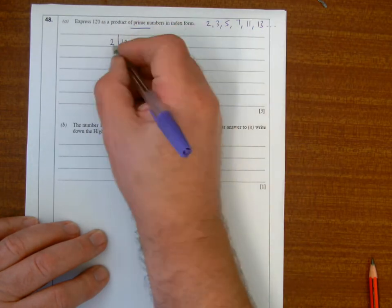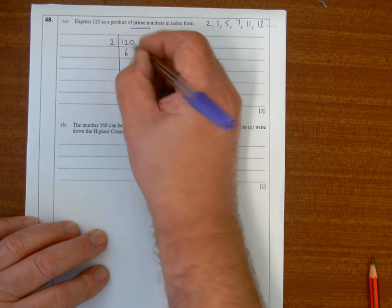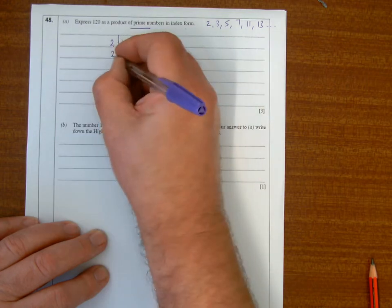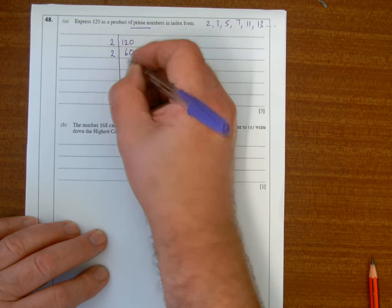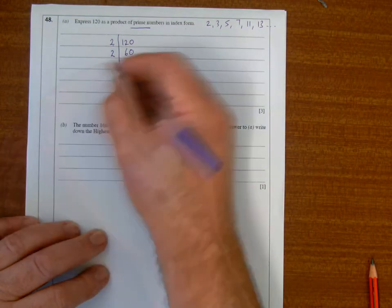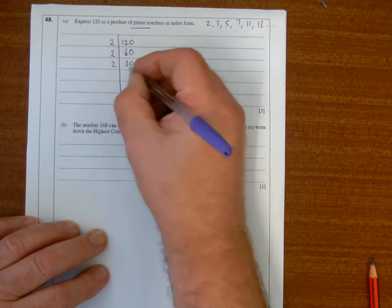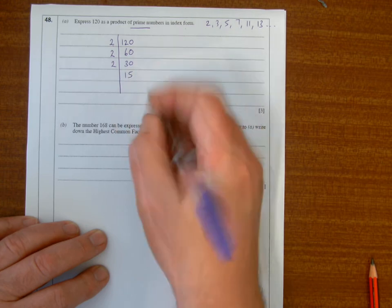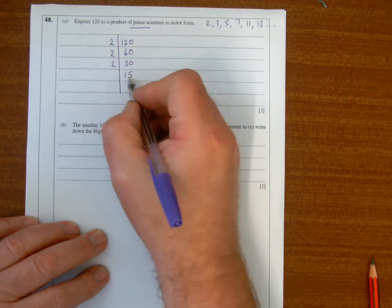2 into 120, 2 into 12 goes 6. That's even, so 2 will go in again. 2 into 60, half of 60 is 30. 2 will go in again, half of 30 is 15.